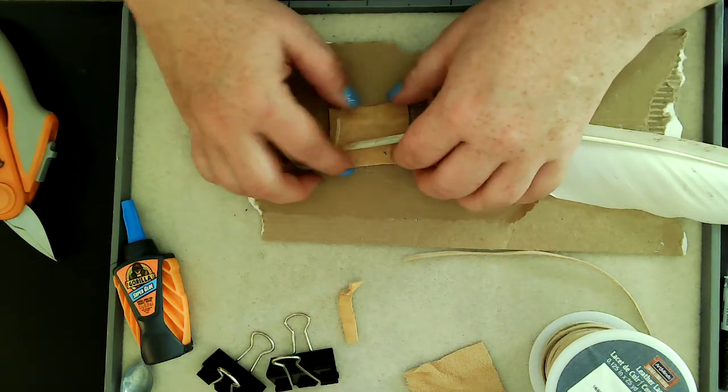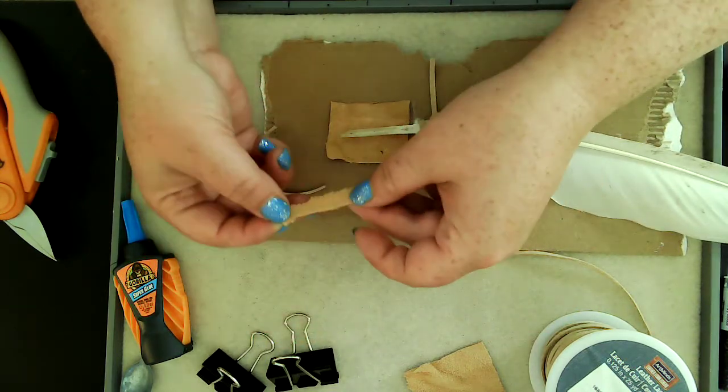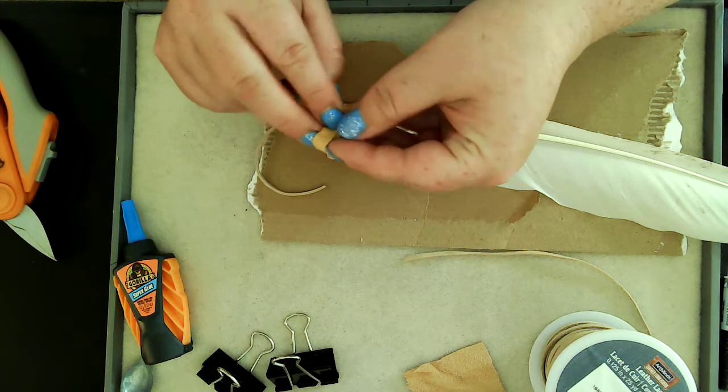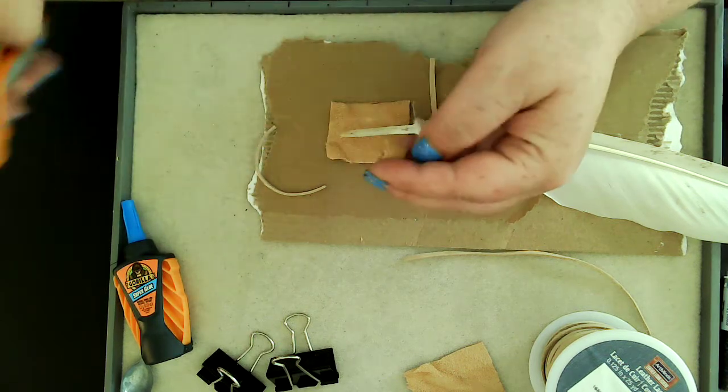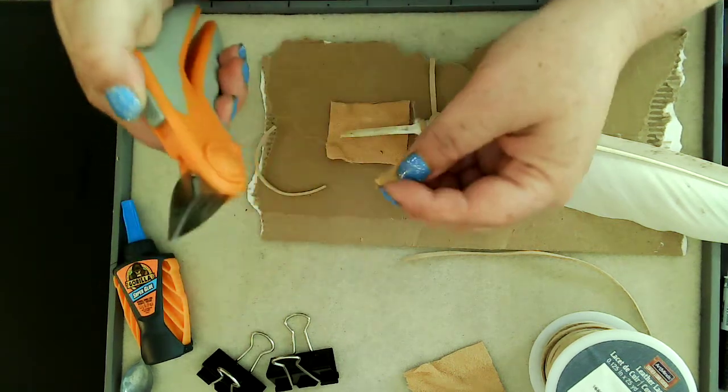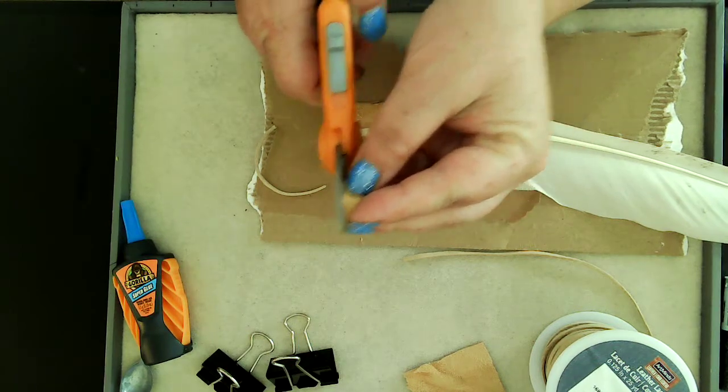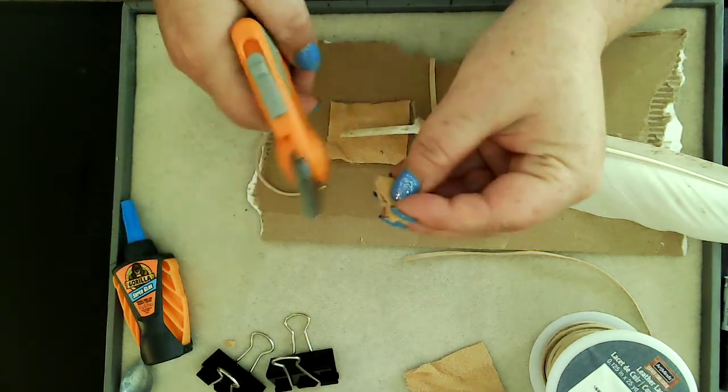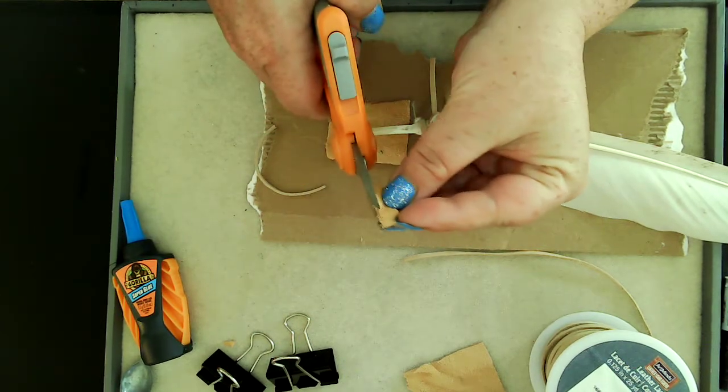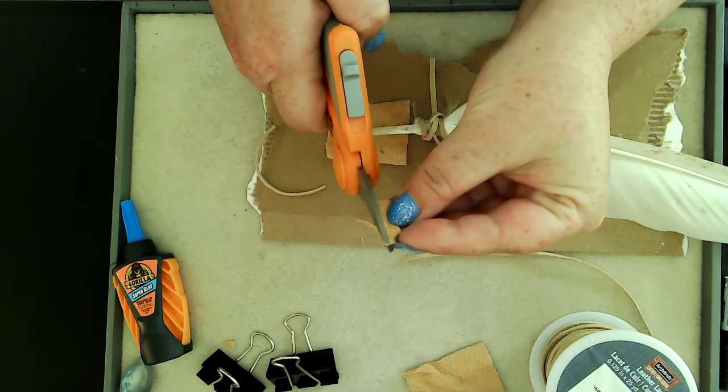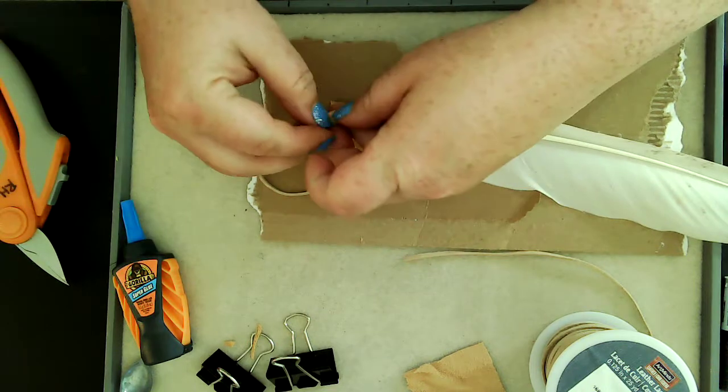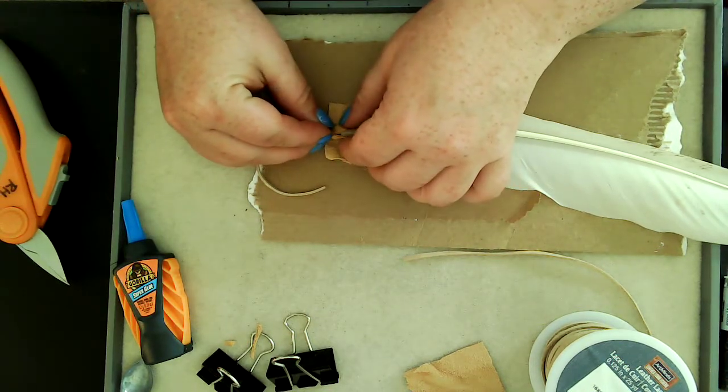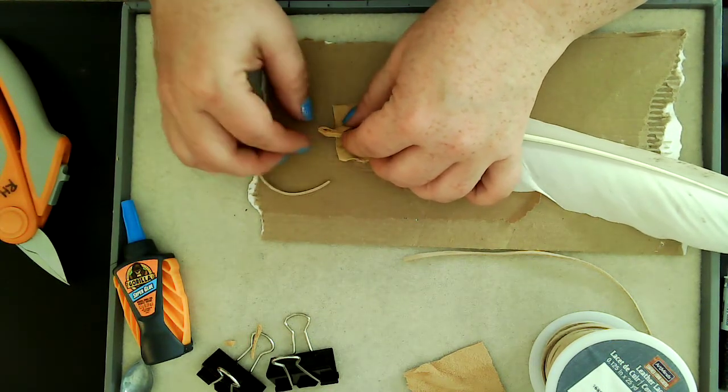Next I'm going to use the leather lace for my loop and you just need enough, kind of eyeballing it. There's no real way to measure this other than hold it up against the feather. I'm only gluing maybe a finger width so I'm going to cut right about here.